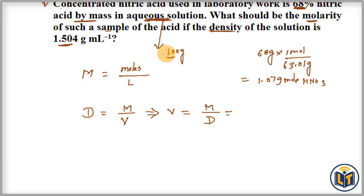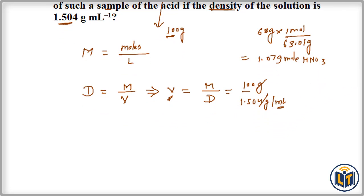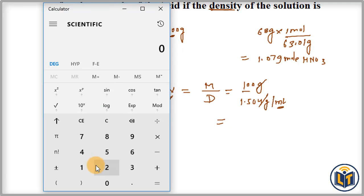Let's plug in the values. M is 100 grams, and density is 1.504 grams per milliliter. The gram units will cancel out, which means we are going to get the V value in milliliters. We can divide these values: 100 divided by 1.504.